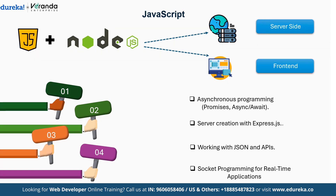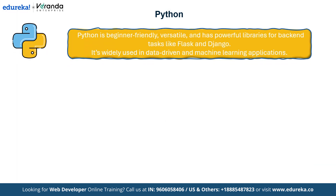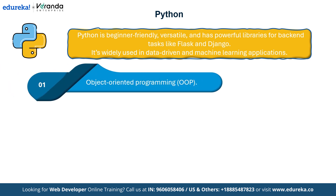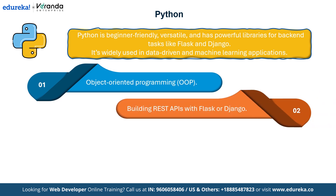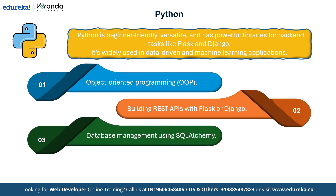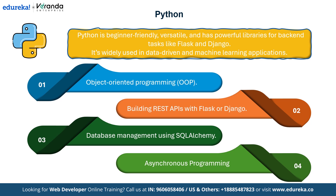The next language in demand is Python. Python is a beginner-friendly, versatile programming language ideal for backend development. With powerful libraries and frameworks like Flask and Django, Python simplifies building web applications. The main concepts to learn include object-oriented programming to create reusable and modular code, building REST APIs with Flask or Django, database management using SQLAlchemy for integrating with databases through ORM (object-relational mapping), and asynchronous programming for handling concurrent operations for better performance and scalability. Python is also widely used in data-driven and machine learning applications, making it an excellent choice for backend development.